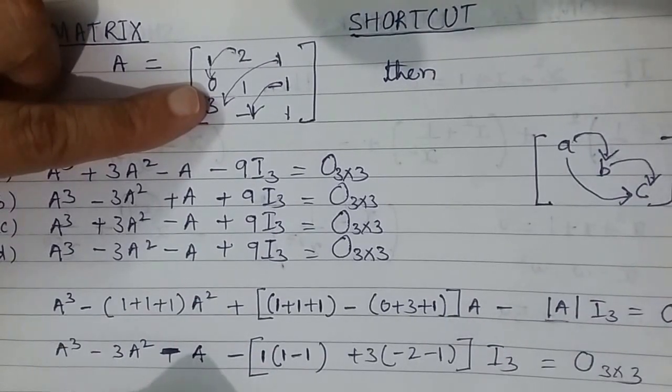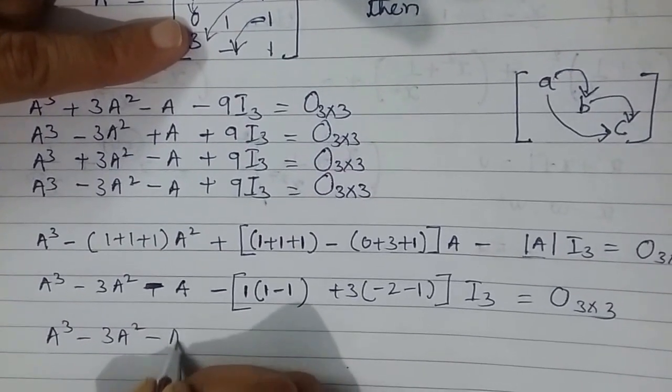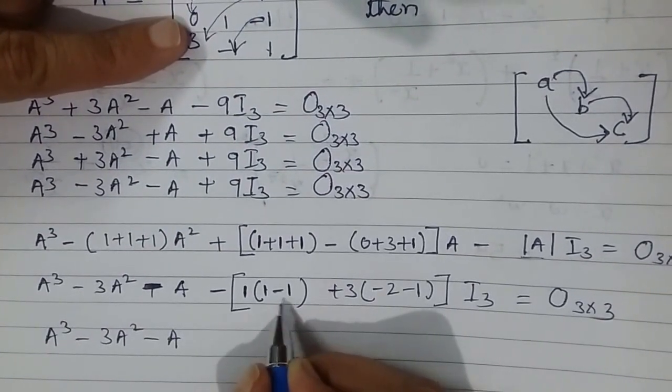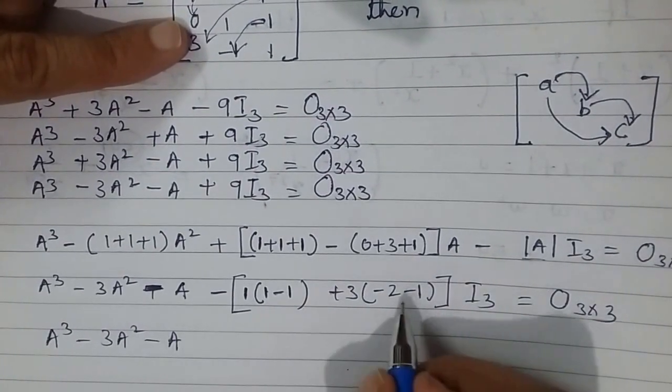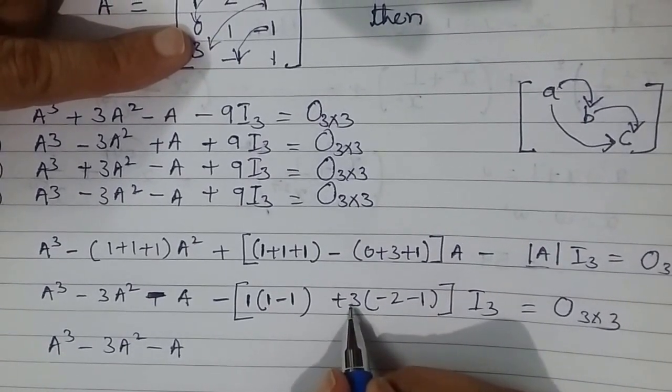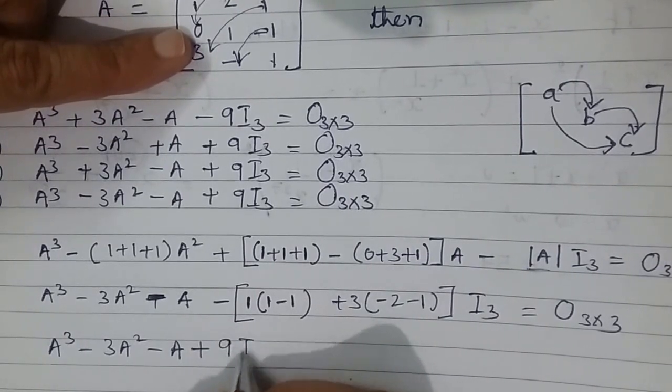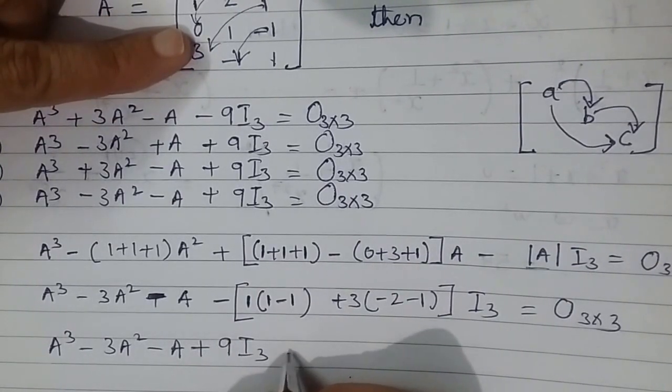So this will be A³ - 3A² - A, and 1 minus 1 minus 1 is minus 3. Minus 3 times 3 is minus 9, and minus 1, so this is plus 9I₃ equals 0 for the 3 by 3 matrix.